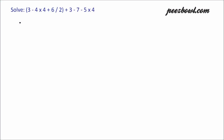Let us solve this arithmetic equation. We have 3 minus 4 multiplied by 4 plus 6 divided by 2 in one parenthesis. Then we have plus 3 minus 7 minus 5 multiplied by 4.